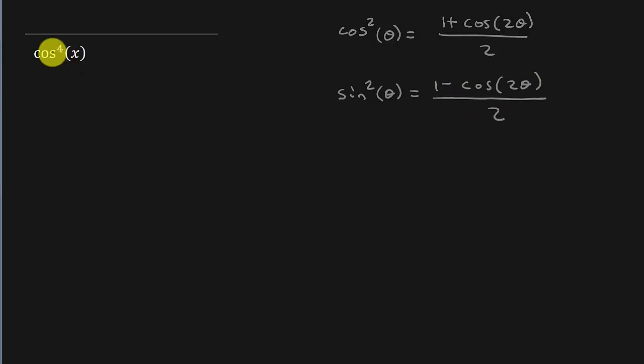So we've got cosine, so we're going to be working with this formula here. Now notice the formula is cosine squared is equal to this. Well we have cosine to the fourth, so we don't have a formula for that.